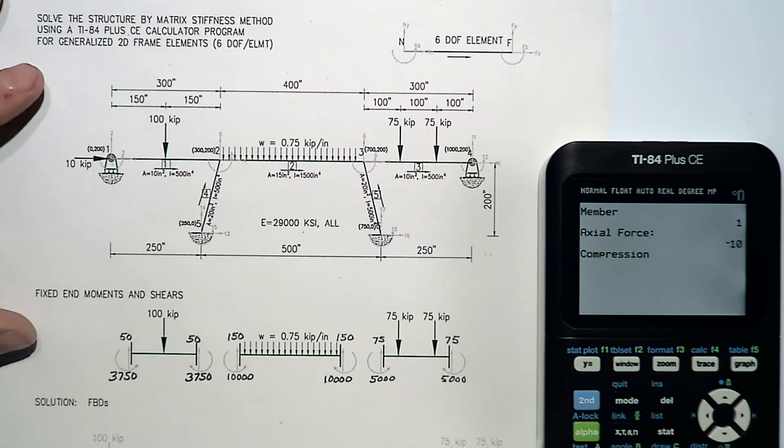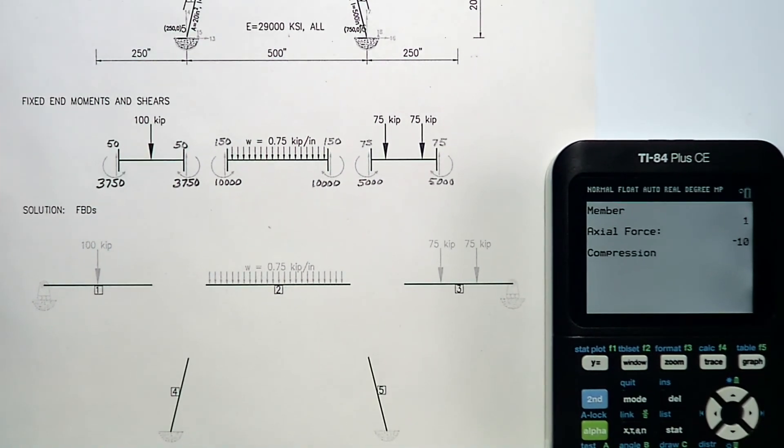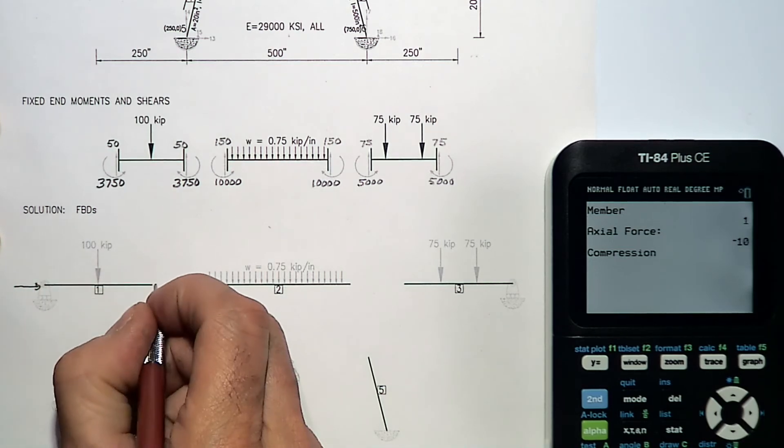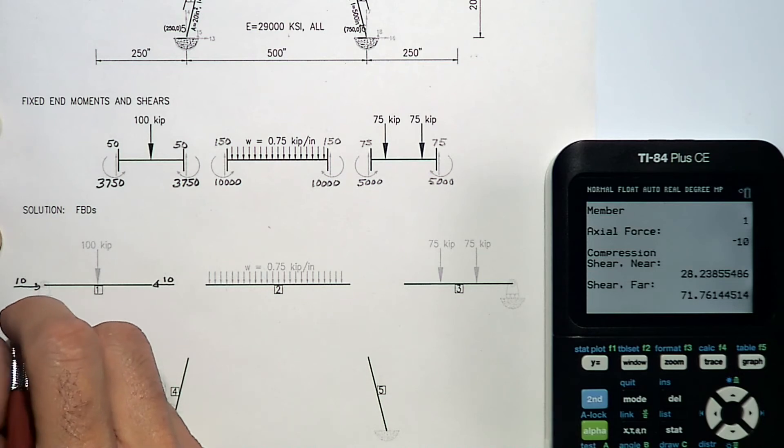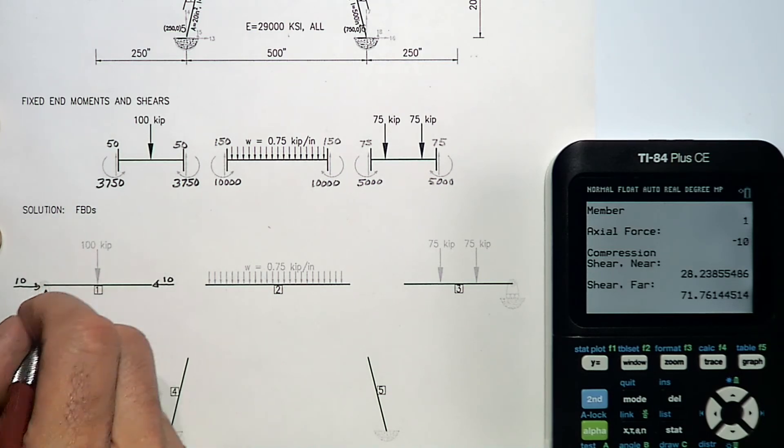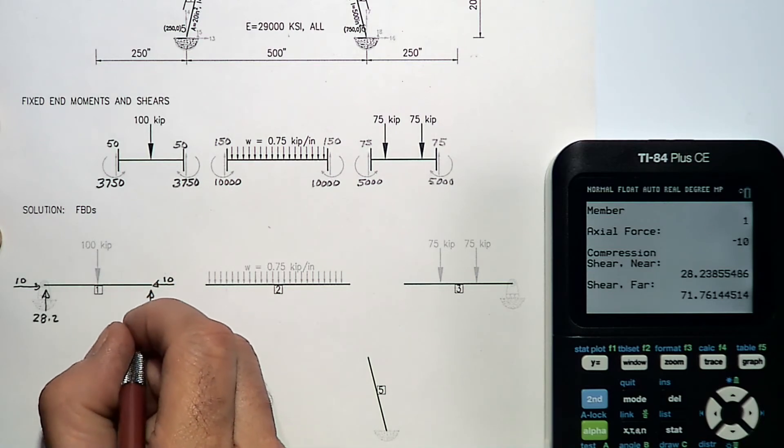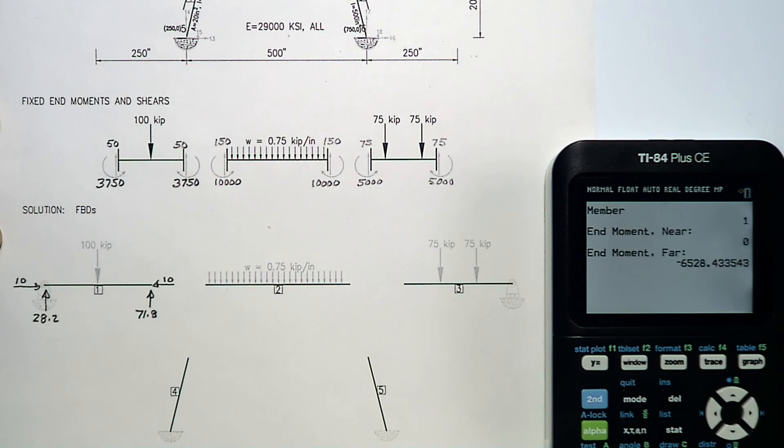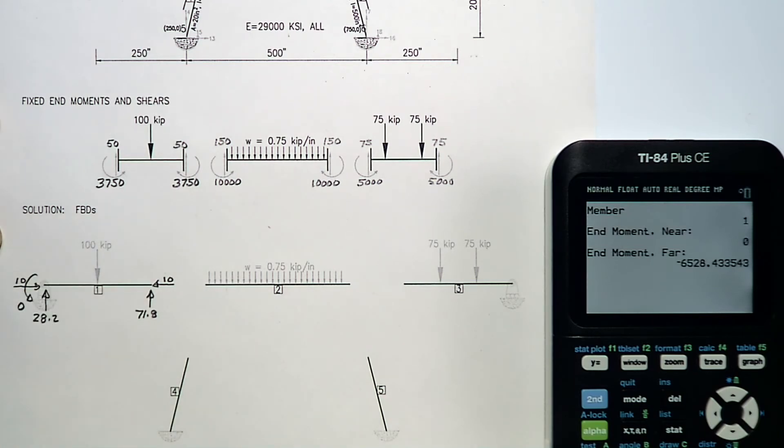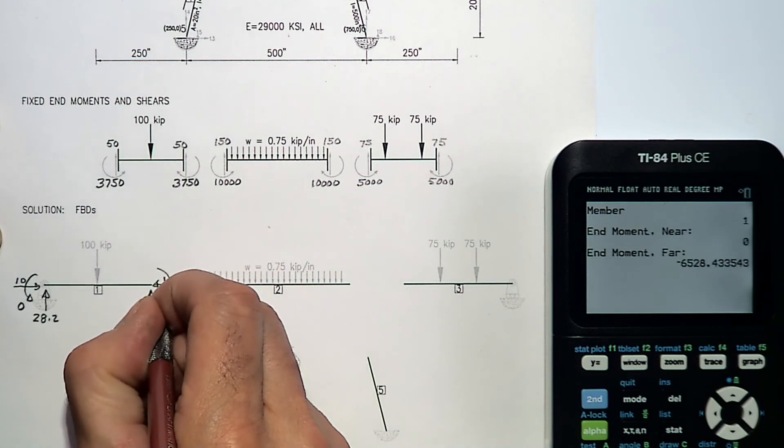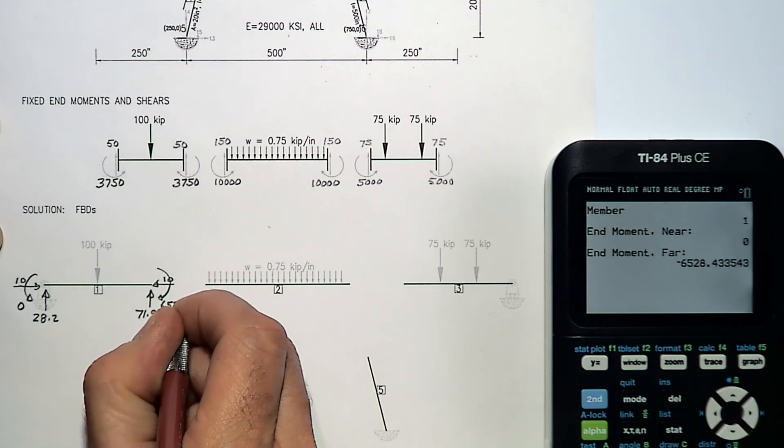Now I'm looking at my global displacements. There are all the global displacements. Now I have my member forces and I'm ready for free body diagrams. Member one has an axial compression of ten kips. There's my free body diagram of member one. I have a near side shear of 28.2 and a far side shear of 71.8. My near end moment is zero because that's a roller condition. Then I have a far end moment of 65.28 kip inches.